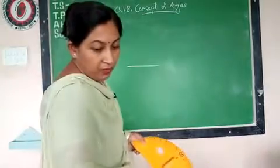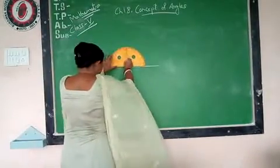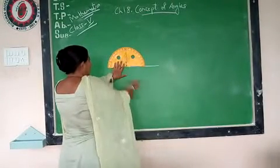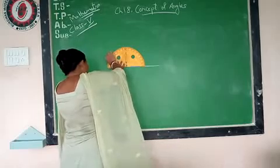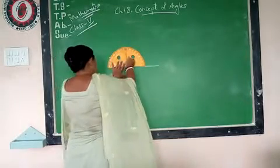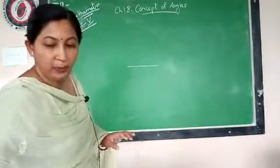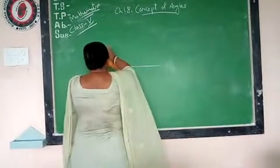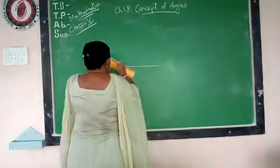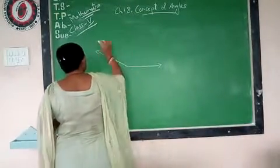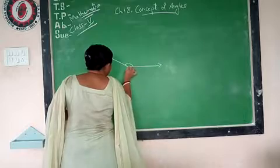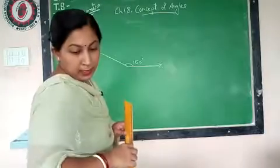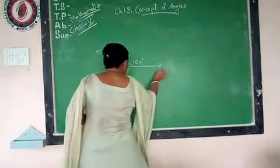Then, take the protractor. And it is 150 for this angle. As the arrow is showing, keep it at one end point, and then measure from the inner angles. Now, extend the angle with the help of the scale. I am extending the angle with the help of the scale. Since it is a ray, one side is endlessly going.